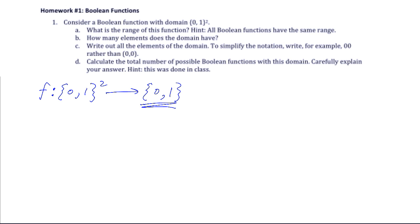Next it asks how many elements does the domain have. The number of elements in a set is denoted by using absolute value signs. So for part B, to answer how many elements the domain has, I'm going to write out the set which is the domain, put absolute value signs on it, and evaluate that.